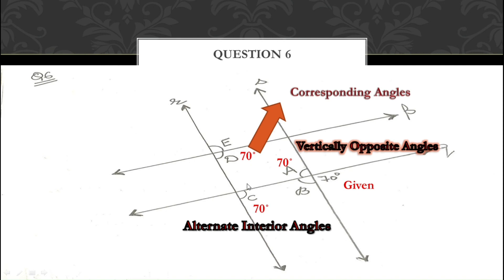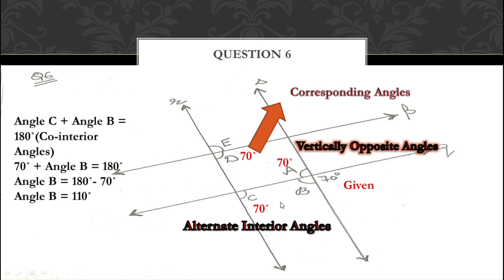Now we find angle B. Angles C and B are in the interior region on the same side of the transversal — they are co-interior angles. Equation: angle C + angle B = 180°. Since angle C = 70°, angle B = 180 − 70 = 110°.